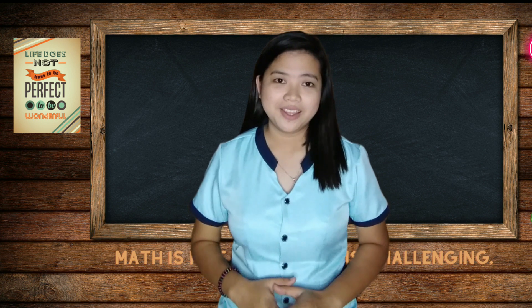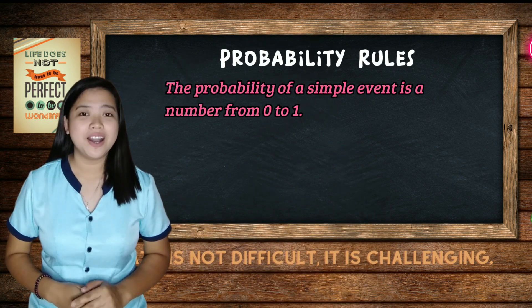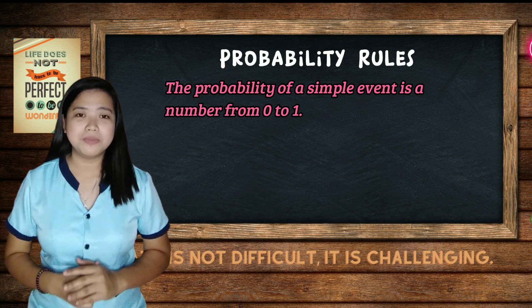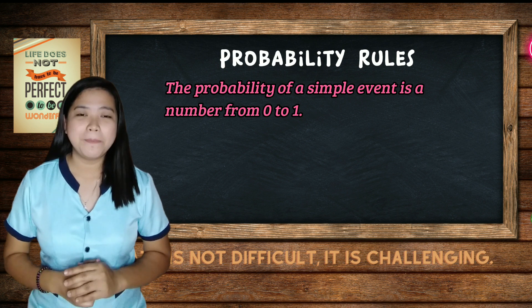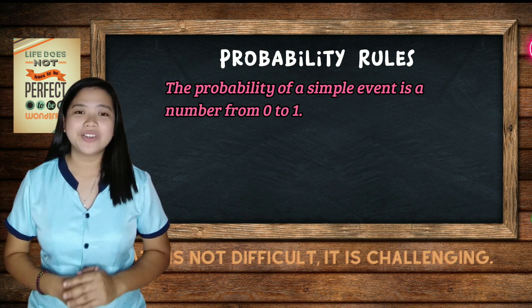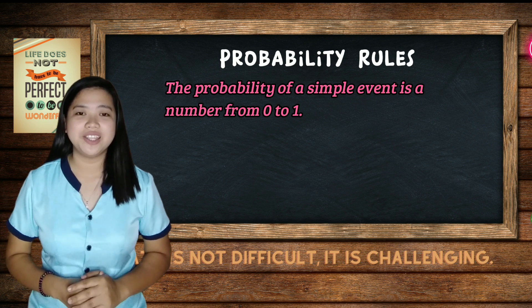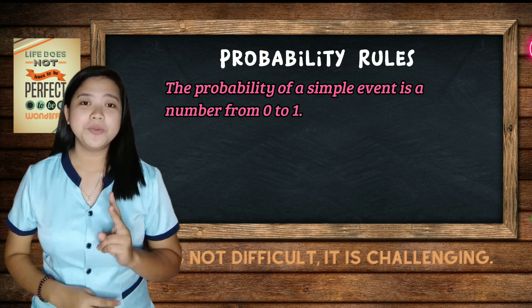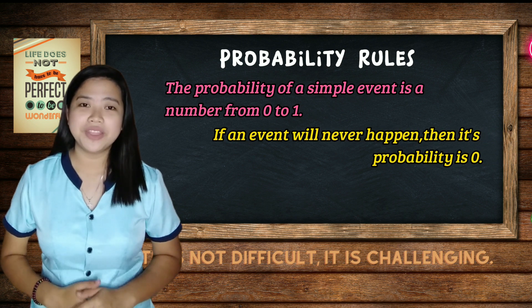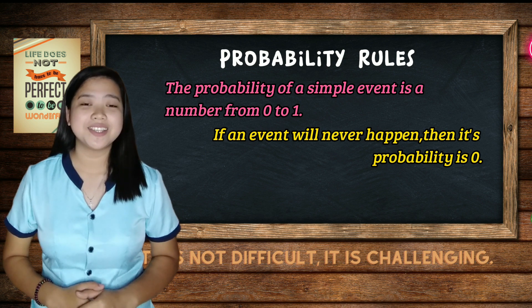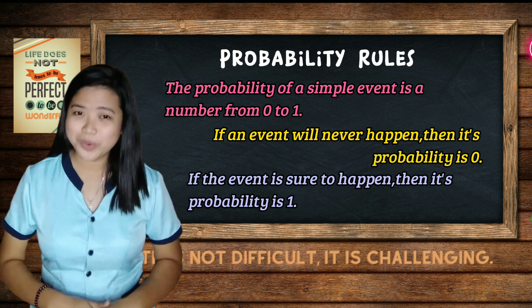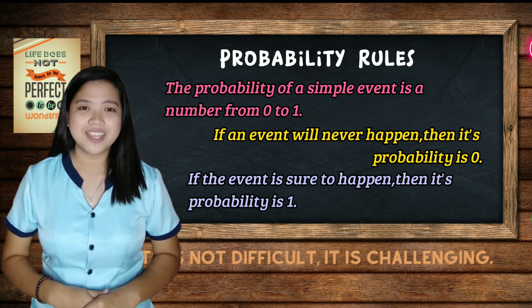There are three probability rules to keep in mind. First, the probability of an event is between 0 and 1 — it cannot be less than 0 or greater than 1, and can be expressed as a fraction, decimal, or percent. Second, if an event will never happen, then the probability is 0. Third, if the event is sure to happen, then the probability is 1.